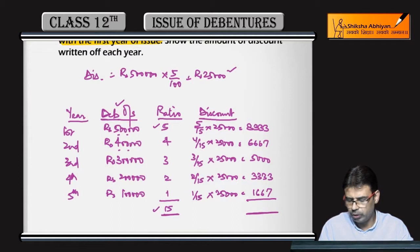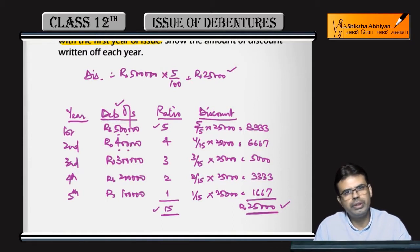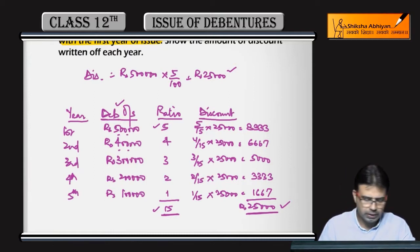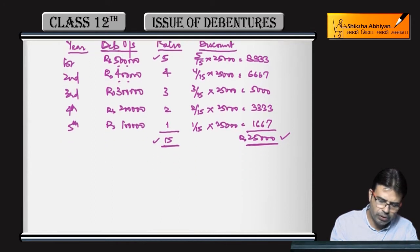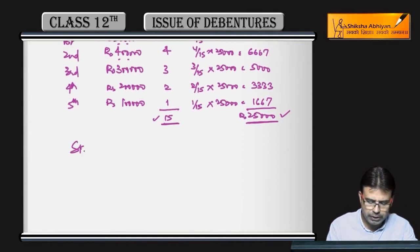Because we have done rounding off in between, you should total it and check - there's one rupee difference. Wherever there's a question, do the rounding off and verify the total. That's it, the amounts are calculated. Only the amounts are different, the entries remain the same, and the accounts are also prepared the same way.